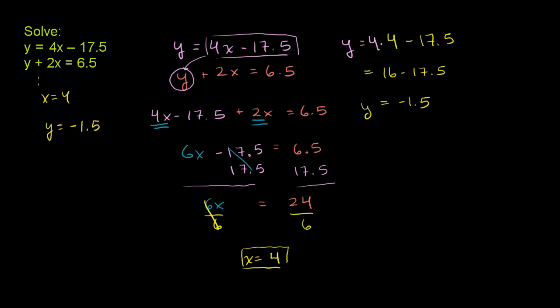And you can verify that these work for both equations. If you put 4 times 4 minus 17.5, you get negative 1.5. They also work for the second one. If you take negative 1.5 plus 2 times 4, that's negative 1.5 plus 8. Well, negative 1.5 plus 8 is 6.5. So this x and y satisfy both equations.